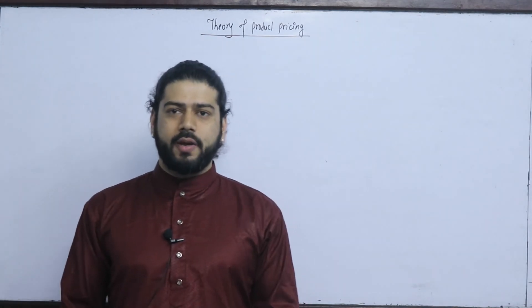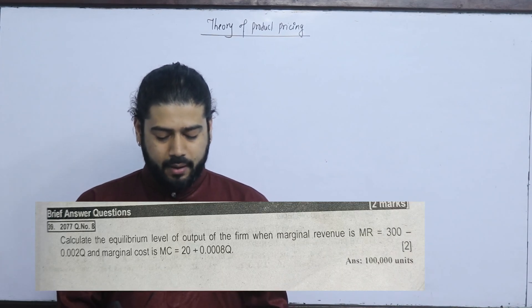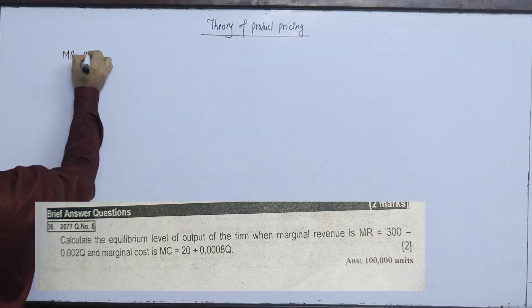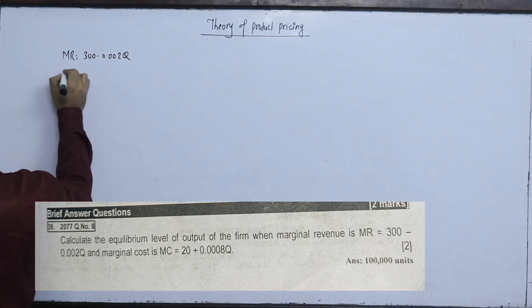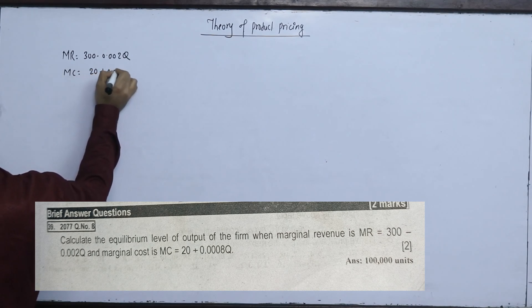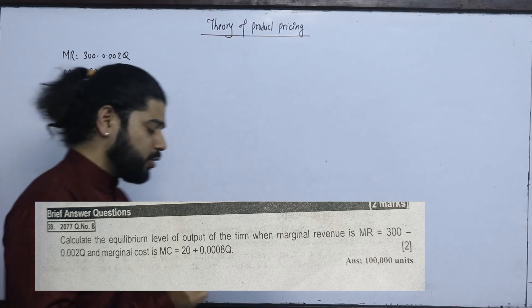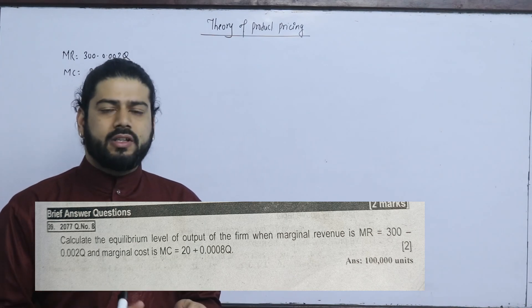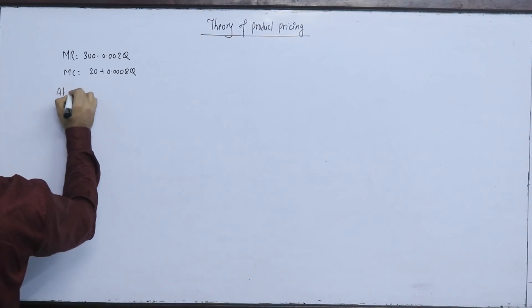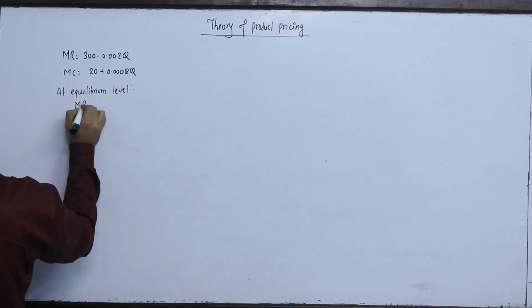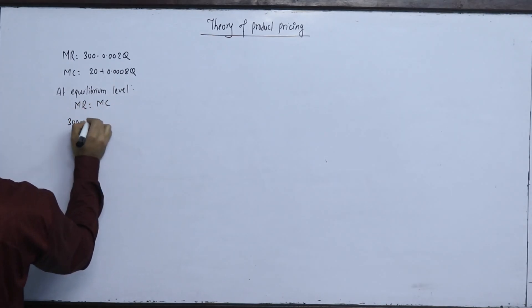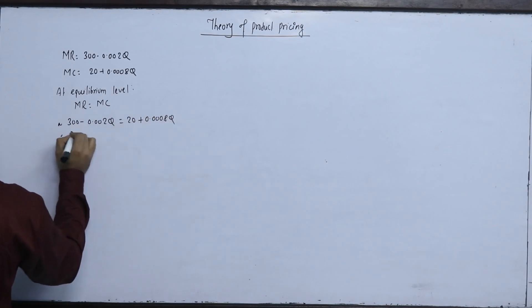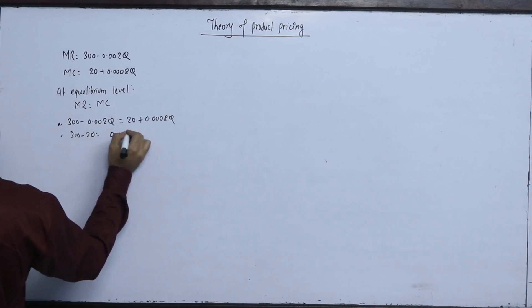The first question is: calculate the equilibrium level of output of the firm when marginal revenue is 300 minus 0.002q.